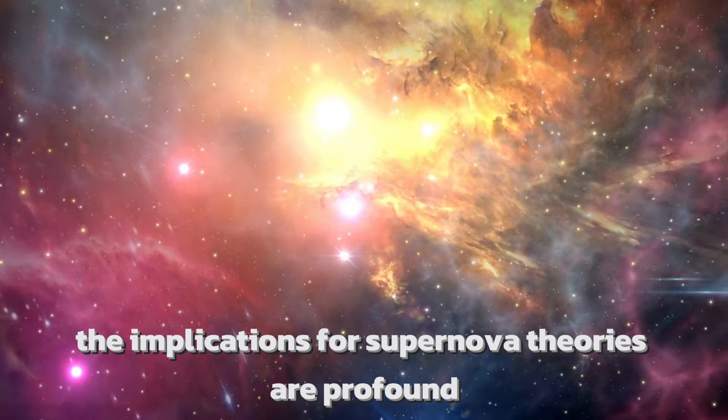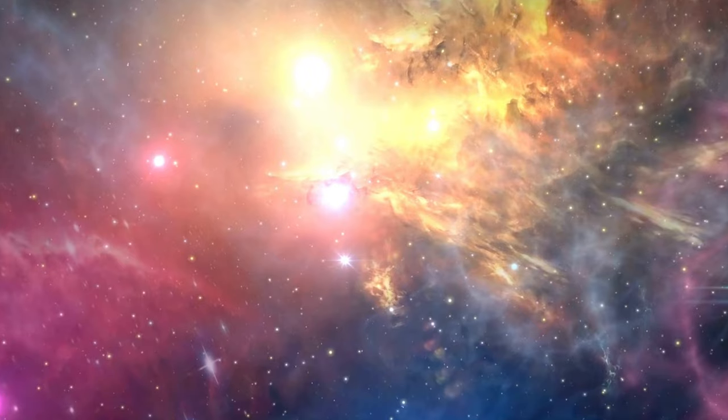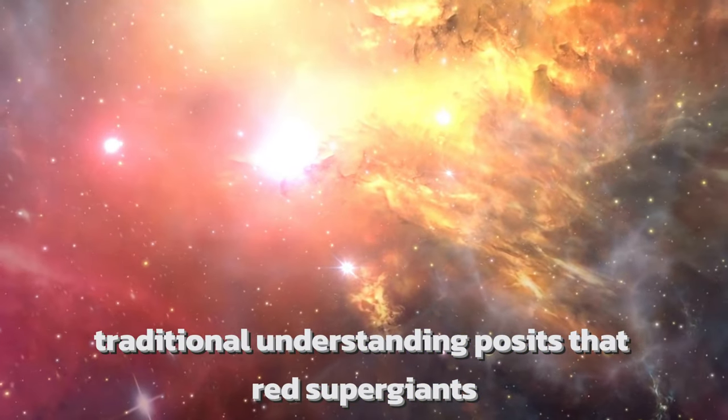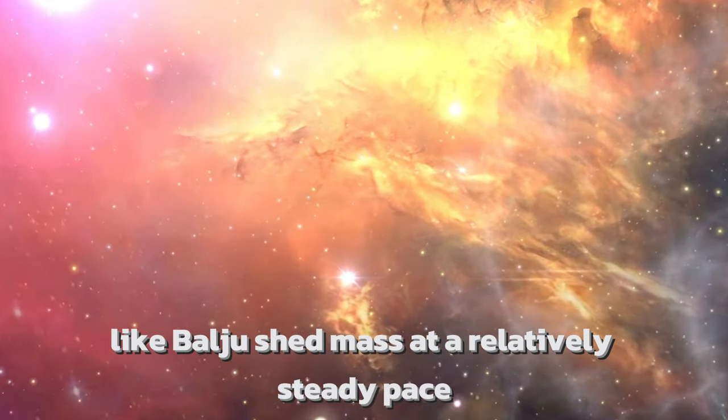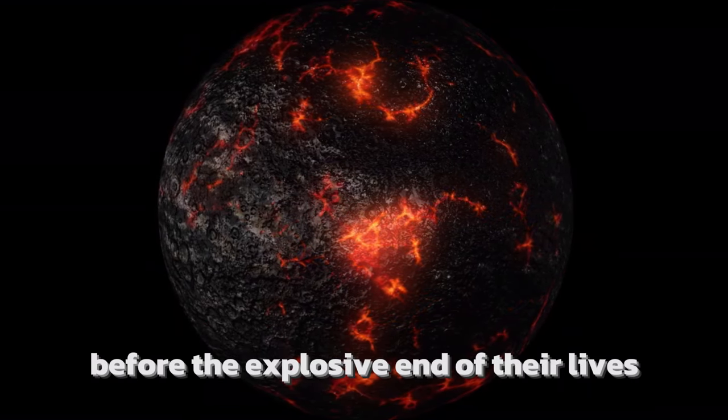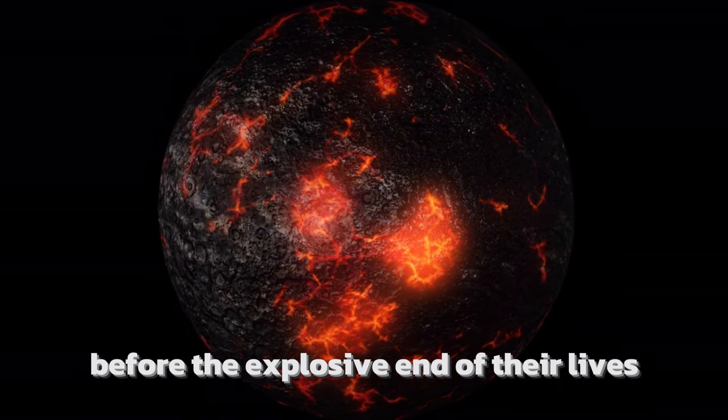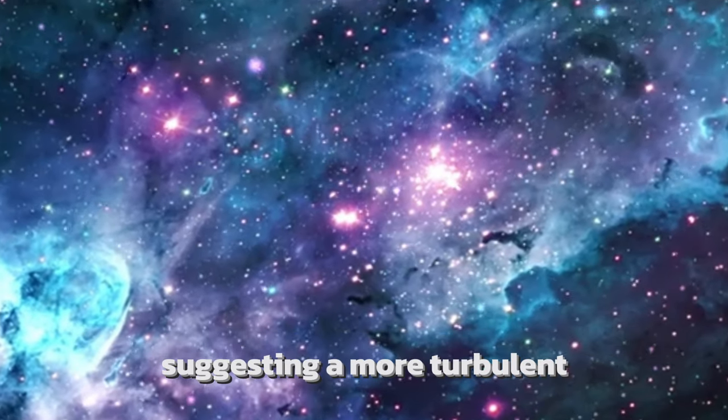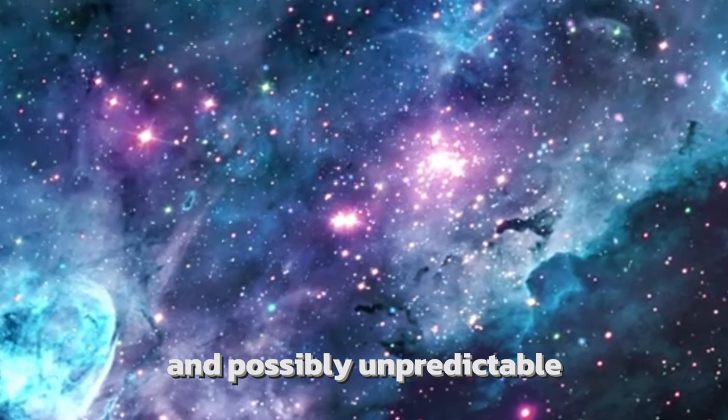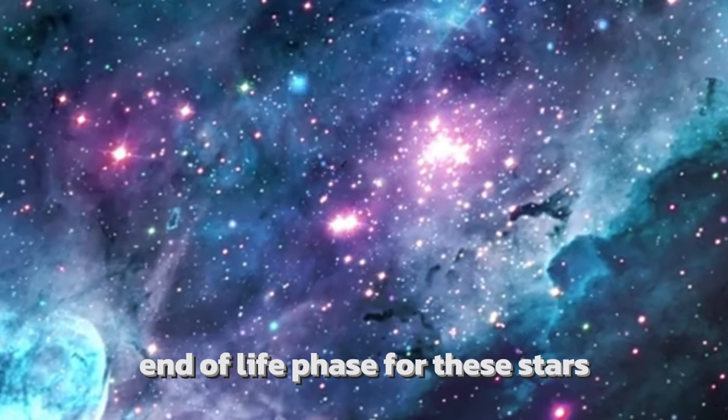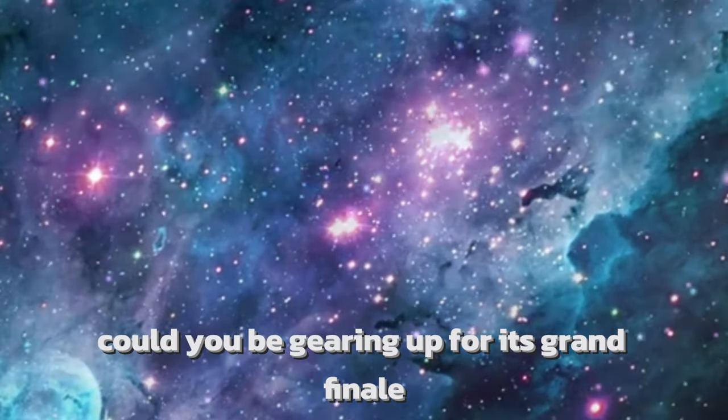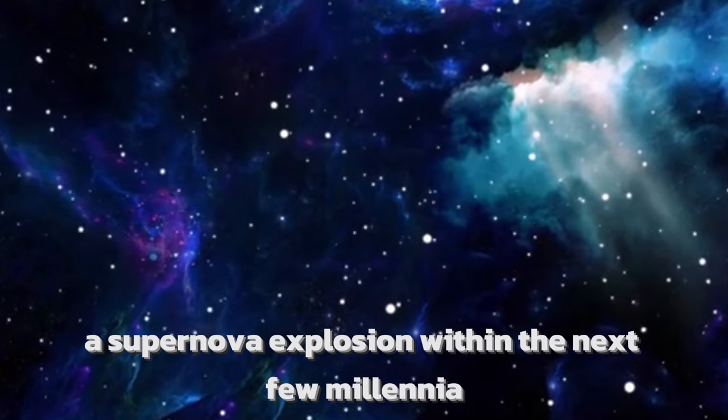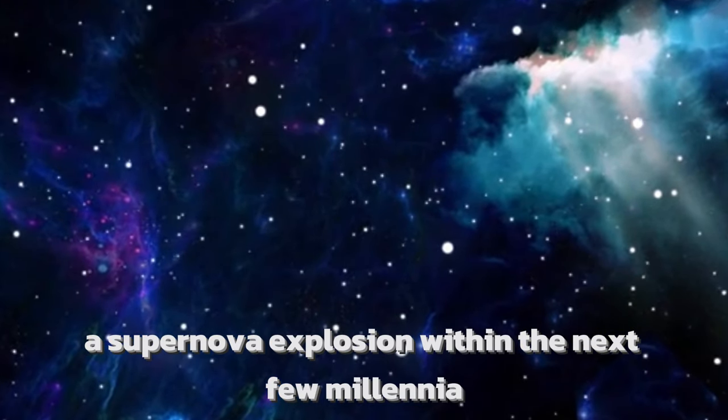The implications for supernova theories are profound. Traditional understanding posits that red supergiants like Betelgeuse shed mass at a relatively steady pace before the explosive end of their lives. However, the scale of this ejection challenges this notion, suggesting a more turbulent and possibly unpredictable end-of-life phase for these stars. Could Betelgeuse be gearing up for its grand finale, a supernova explosion within the next few millennia?